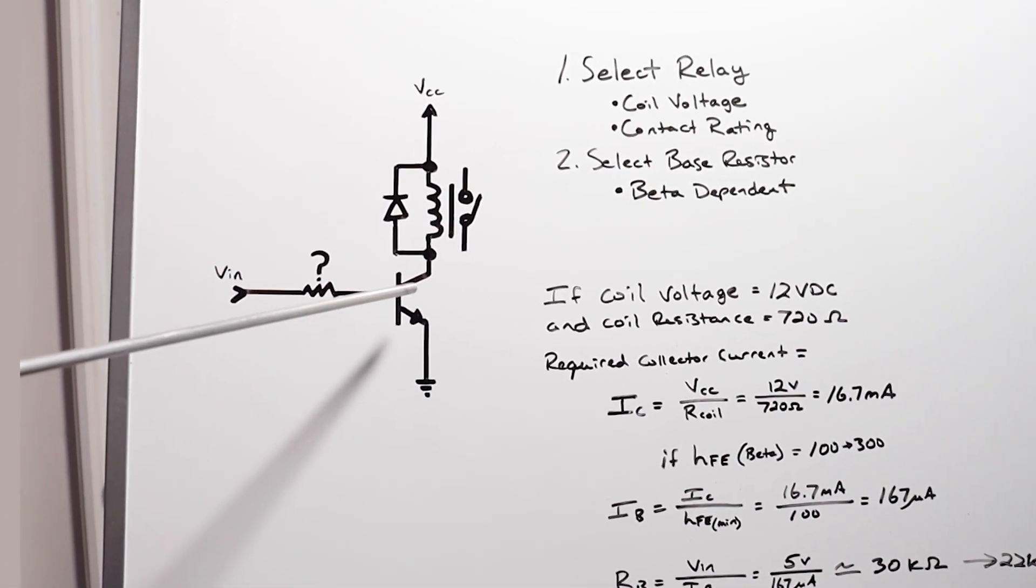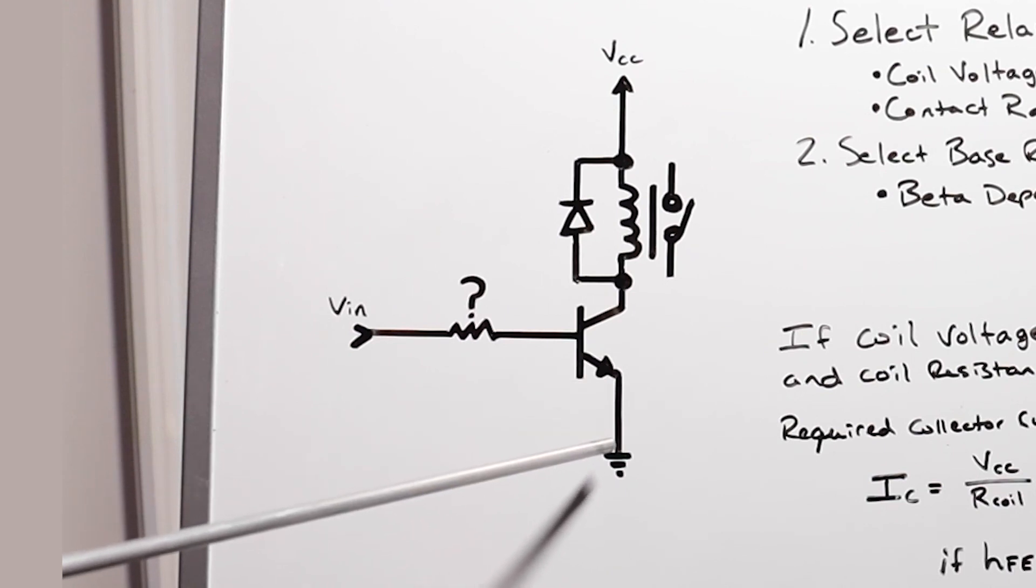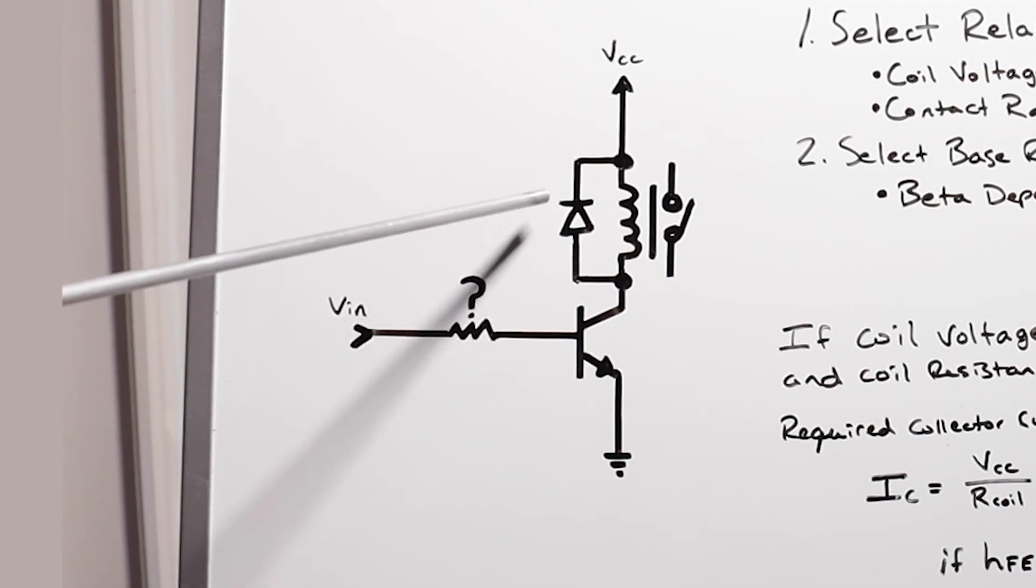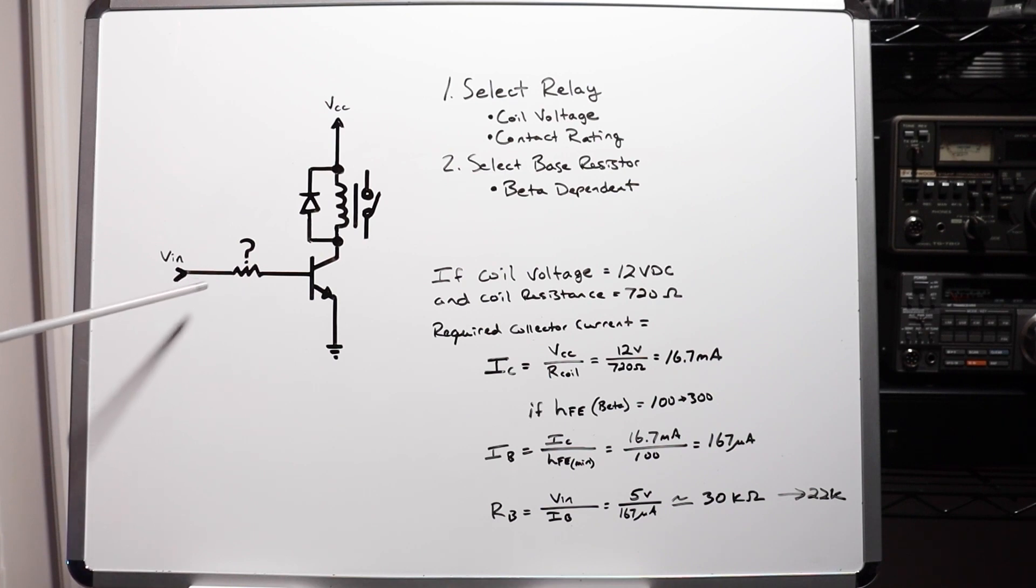So in that case we have an NPN transistor with the emitter connected directly to ground and the collector connected to the coil, coil connected to our positive supply, which is going to be 12 volts. Now we have this what's called a freewheeling diode that protects the transistor when you de-energize this coil. We'll talk about that a little bit more in a minute. But we need to make sure that we drive the transistor with enough current to supply enough current to the coil, so this guy acts as a buffer, giving it more current drive capability.